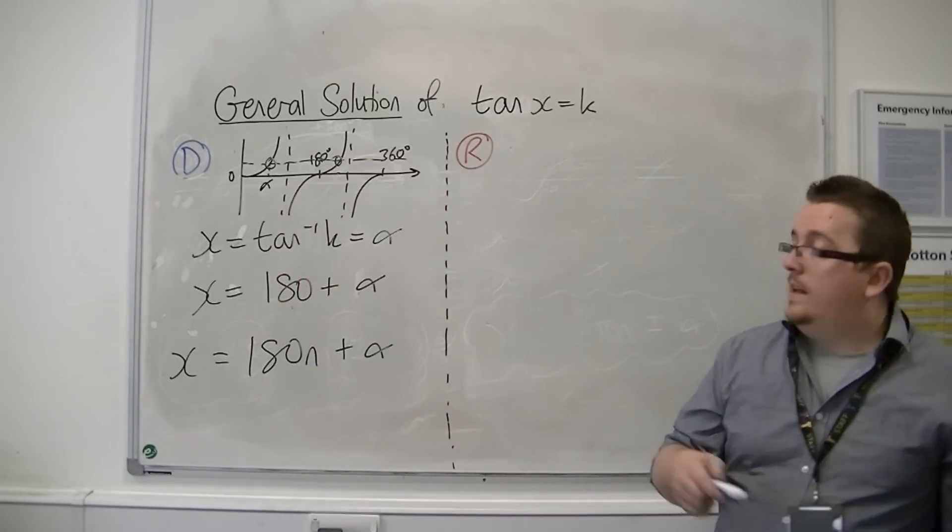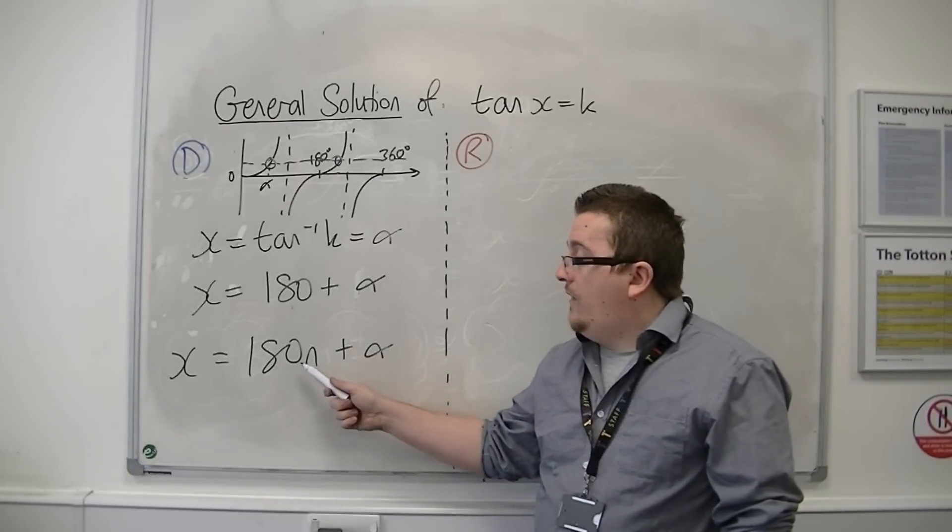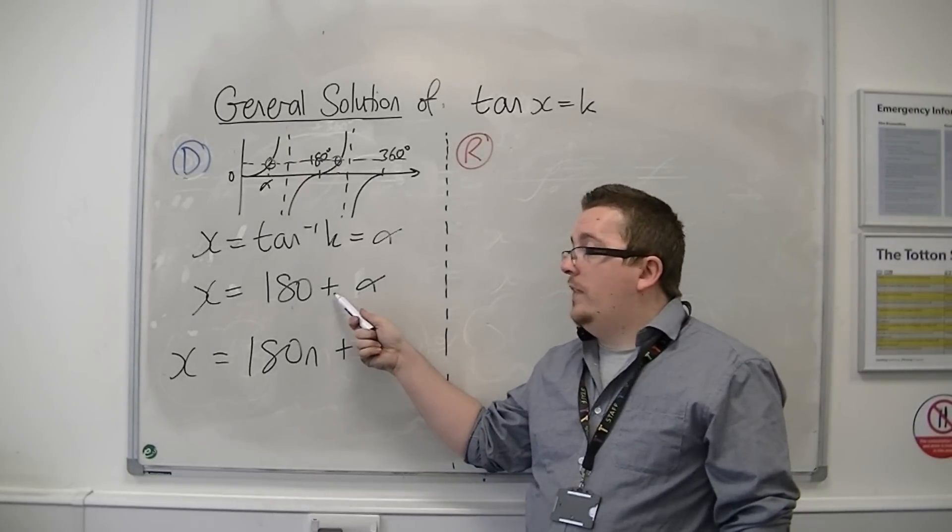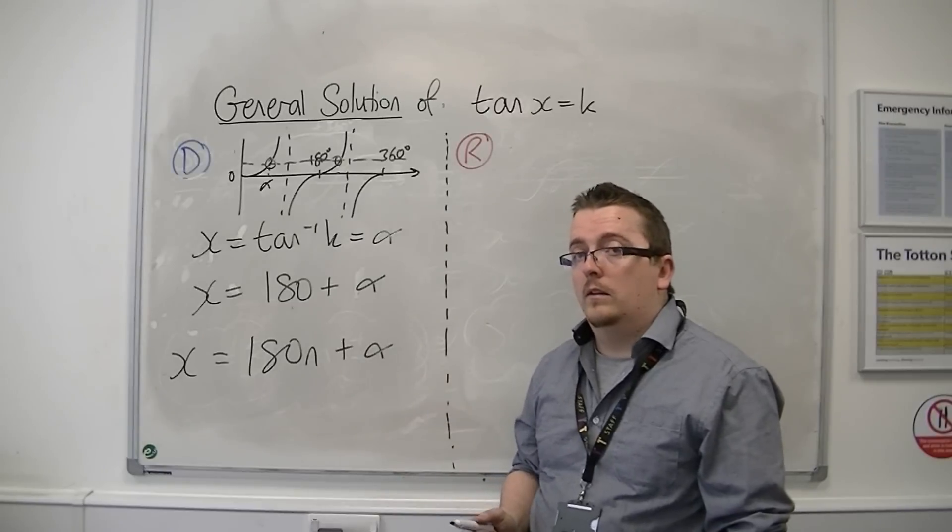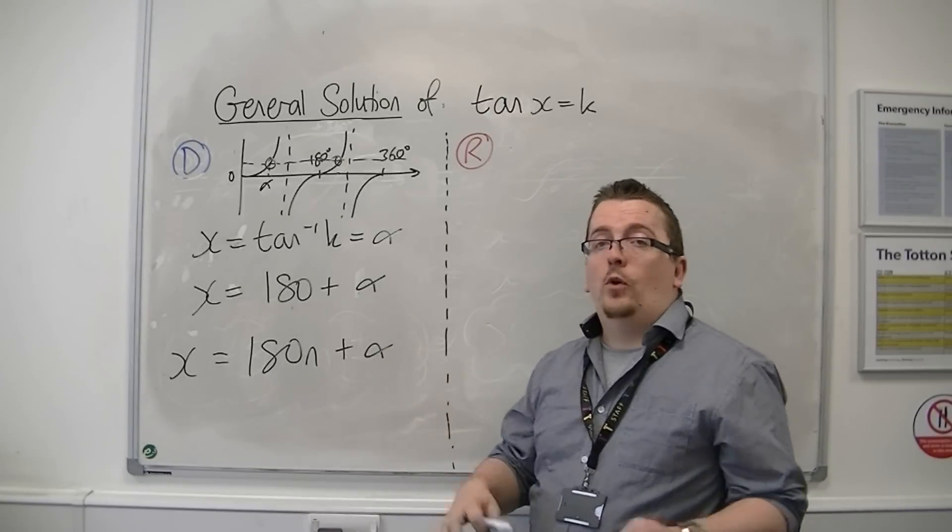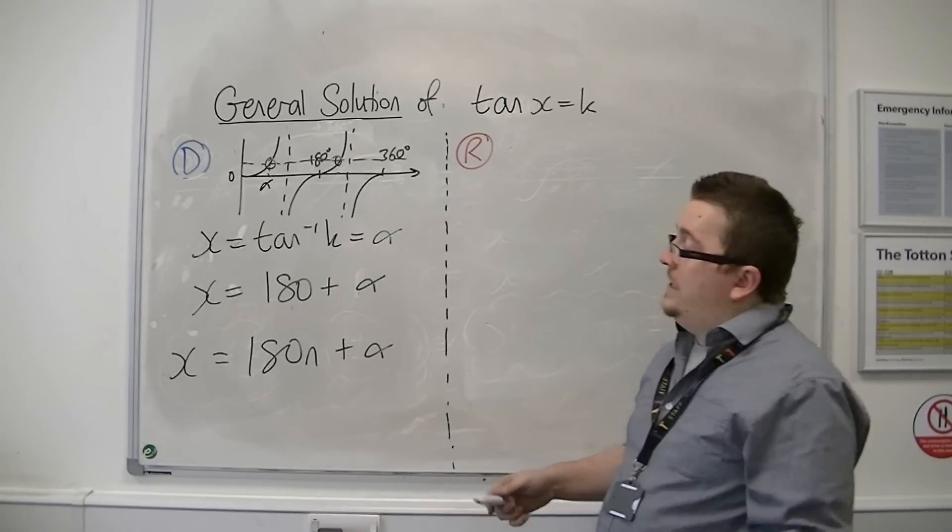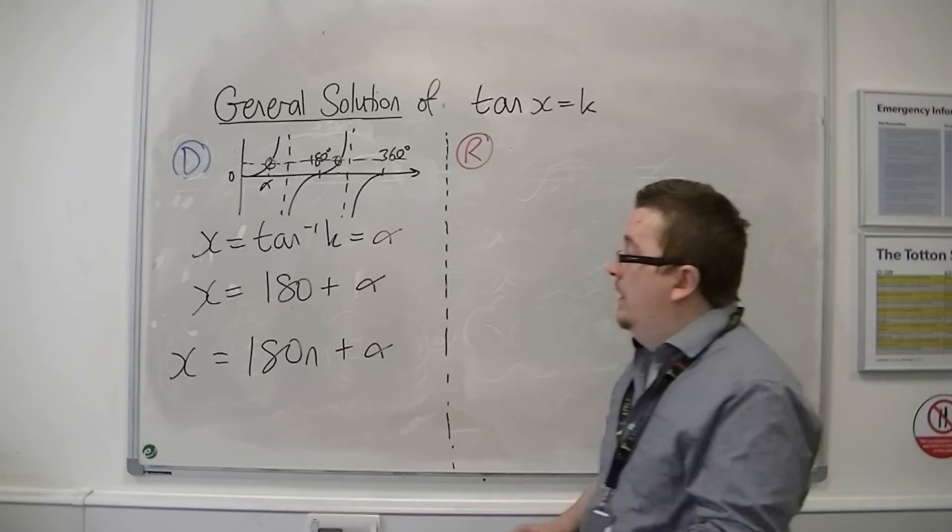And you can see that this, if n is 1, is exactly what that second solution is as well. So this generates all of them. I don't need to have two equations. If n is 0, I get the first one.